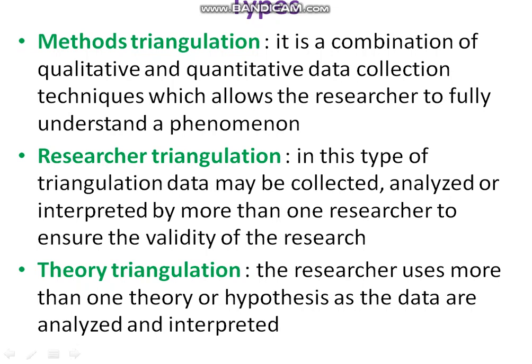Researcher triangulation involves the study being conducted by more than one researcher, in order to maximize validity and minimize researcher bias in the findings. The last type is theory triangulation, where the researcher uses more than one theory or hypothesis as the data are analyzed and interpreted.